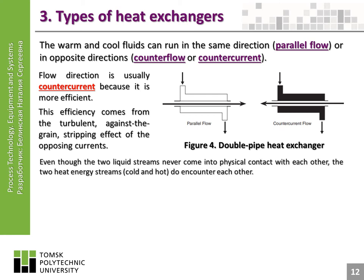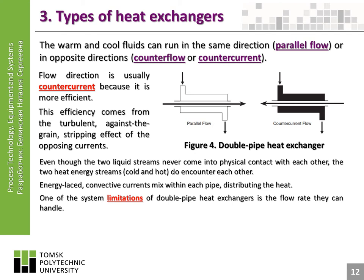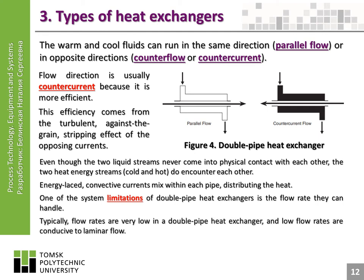Even though the two liquid streams never come into physical contact with each other, the two heat energy streams — cold and hot — do encounter each other. Energy-laced convective currents mix within each pipe, distributing the heat. One of the system limitations of double pipe heat exchangers is the flow rate they can handle. Typically, flow rates are very low in a double pipe heat exchanger, and low flow rates are conducive to laminar flow.